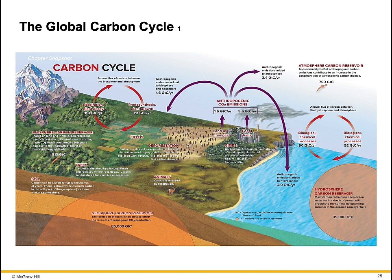Deforestation releases carbon as vegetation is burned. Natural vegetation, such as rainforests, may be replaced with agricultural plants that absorb less carbon dioxide. Animals release carbon through respiration — by breathing out CO2.